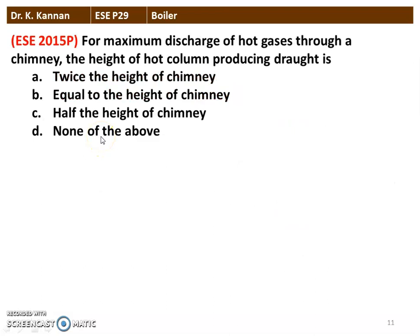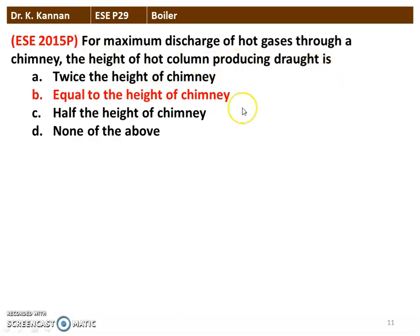Next question from the 2015 question paper: for maximum discharge of hot gases through the chimney, the height of the hot column producing the draught should be — twice the height of the chimney; equal to the height of the chimney; half the height of the chimney; none of the above. The correct option is equal to the height of the chimney.